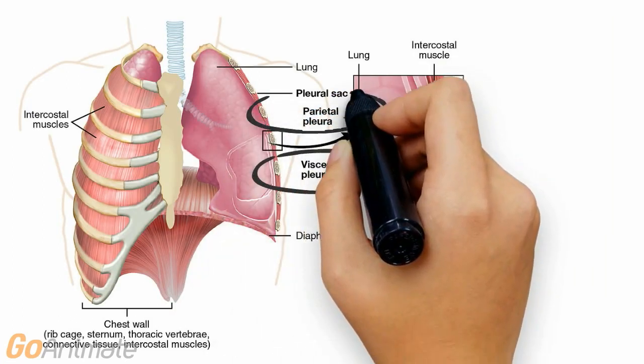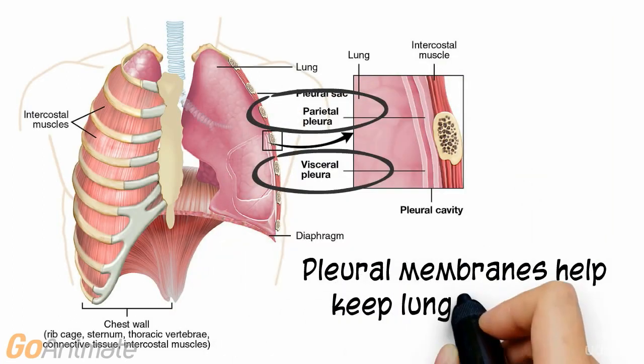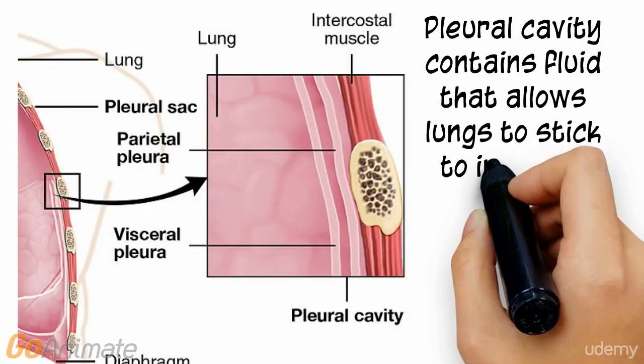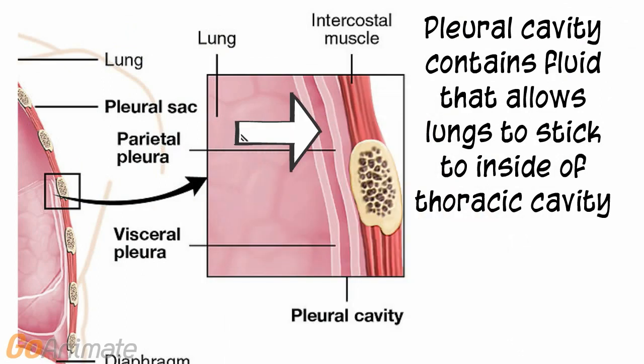The pleural membranes help to keep the lungs inflated. There is a visceral pleura, which is in contact with the lungs, and the parietal pleura, which lines the inside of the thoracic cavity. The pleural cavity contains a fluid that allows the lungs to stick to the inside of the thoracic cavity, helping to keep the lungs inflated.